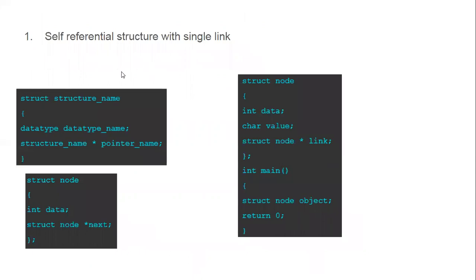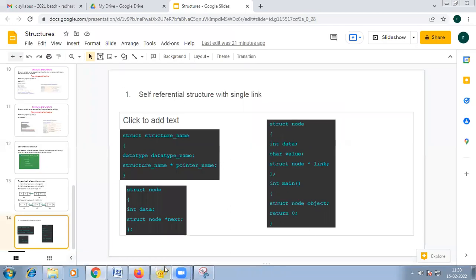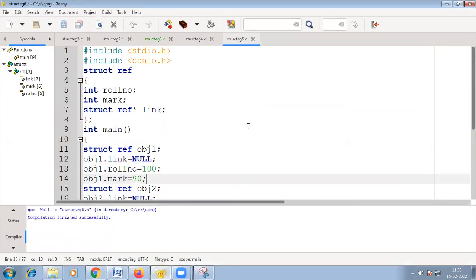To declare a self-referential structure in C, you use the struct keyword followed by a name, then the regular data members, and finally the self-referential member. That last member uses the same struct name followed by a star, making it a pointer variable that points to the same type. For example: struct node with a data member and then struct node star next, where next points back to the same structure.